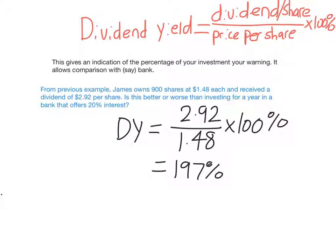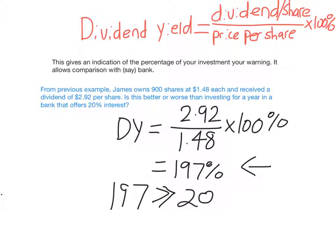197% makes sense because he's almost tripled his money. He started by investing about $1,300 and then made more than double that from the dividend. His dividend yield is 197%, just short of 200%, which would mean tripling his money. Comparing to a bank that offers 20% interest — 197% is much, much greater than 20%, so it is much better that he invested in the share market. He earned 197% of what he originally put in.